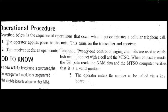Now let us discuss the operational procedure. As the operator applies power to the unit, this turns on the transmitter and receiver. The receiver scans the open control channels — 21 control or paging channels are used to initially establish contact with the cell and MTSO. When contact is made with the cell site, it reads the NAM — number assignment module — and the MIN — mobile identification number.